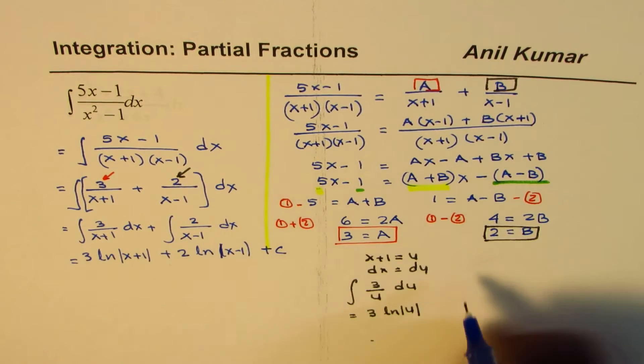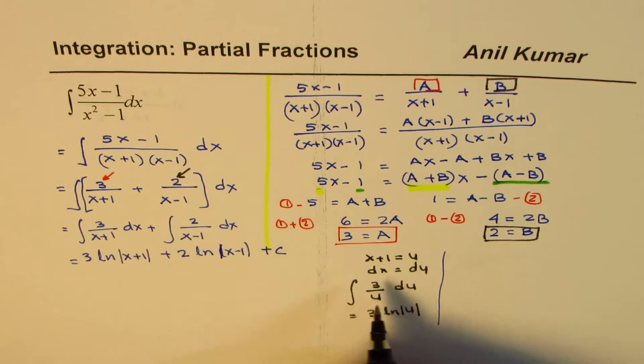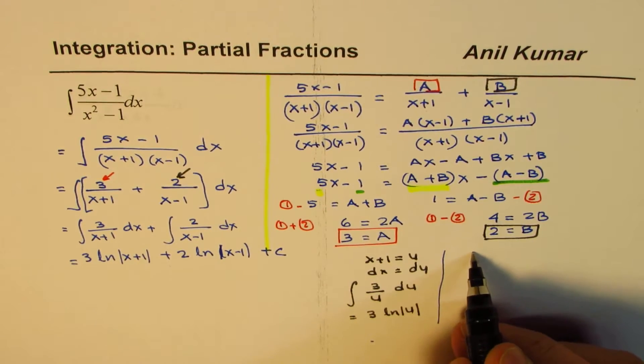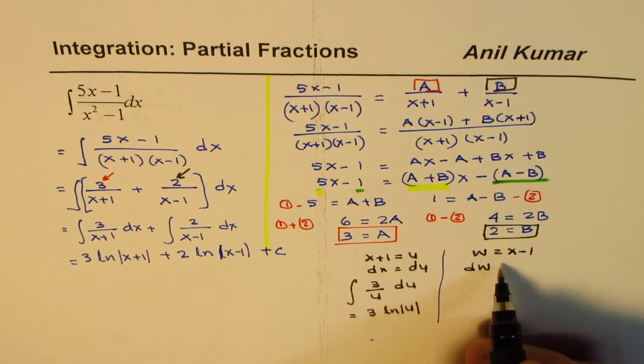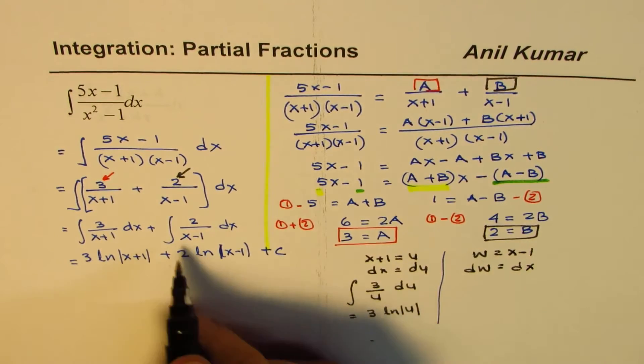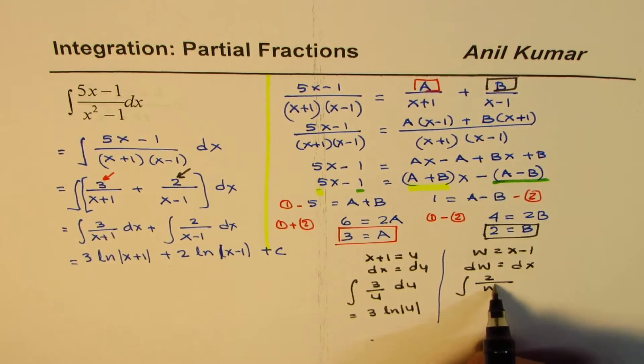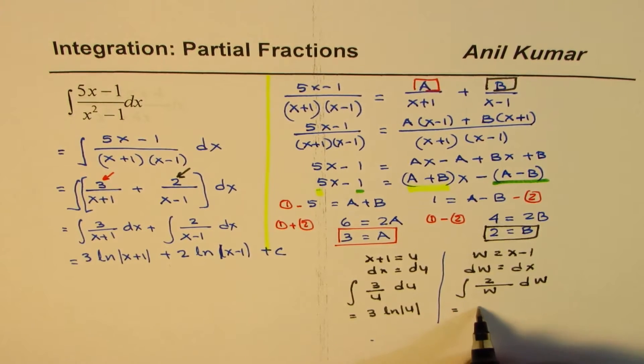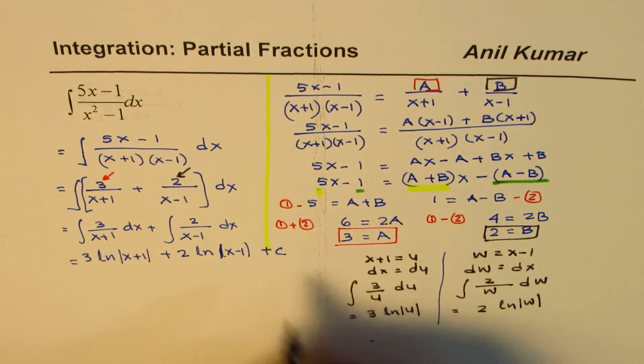Similarly, you could do the other part also, where you may do it separately. So for the other part, you could say let w equals to x minus 1, dw equals to dx. So you could do integral of 2 over w, dw.